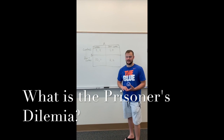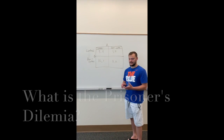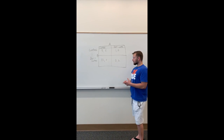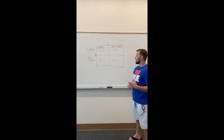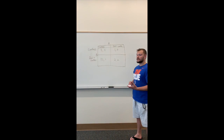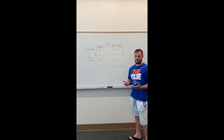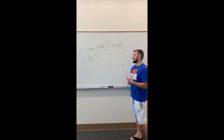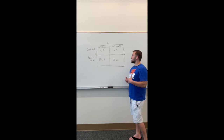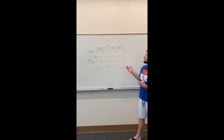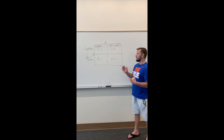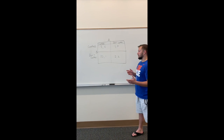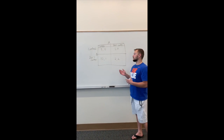So the Prisoner's Dilemma is a game theory example where two prisoners must separately decide whether or not to confess to a crime. If you look at the chart here, if Prisoner A and Prisoner B both do not confess, that would be the ideal situation — they would only have two years each. If Prisoner A does confess and Prisoner B confesses, then they both have five. But if A doesn't confess and B does confess, then B only has one year and A would have ten years.